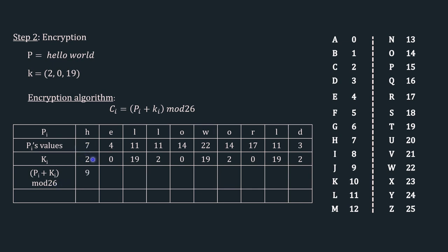Applying Pi + Ki mod 26: 7+2=9, mod 26 is 9; 4+0=4; 11+19=30, mod 26 is 4; 11+2=13; 14+0=14; 22+19=41, mod 26 is 15; 14+2=16; we have 17; 11+19=30, mod 26 is 4; and finally 3+2=5, mod 26 is 5.